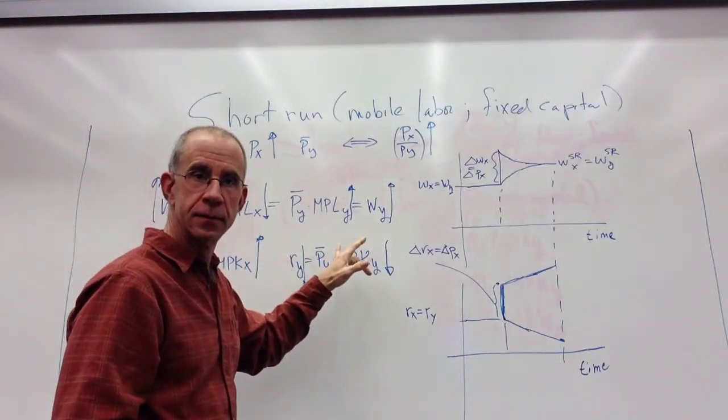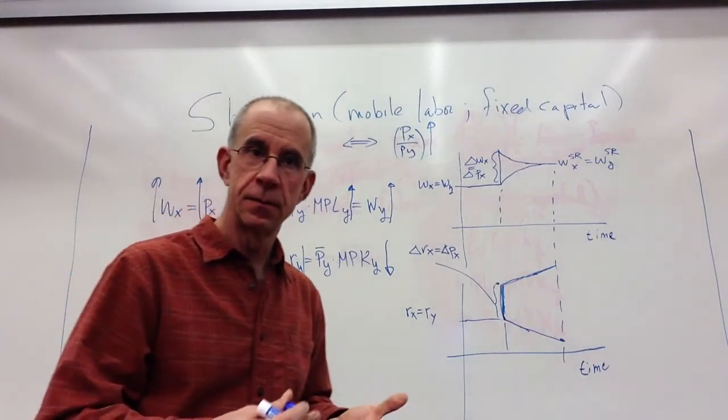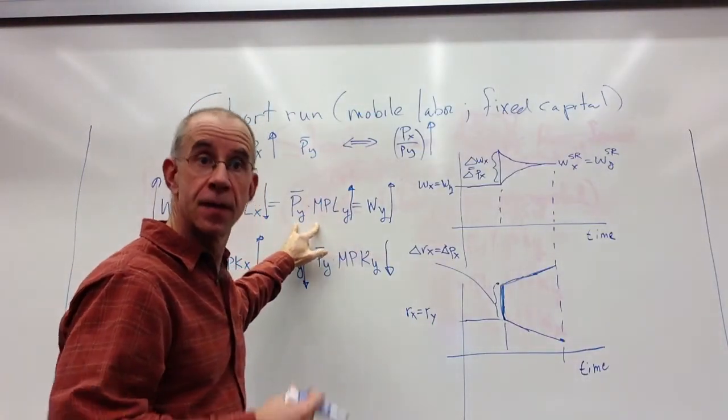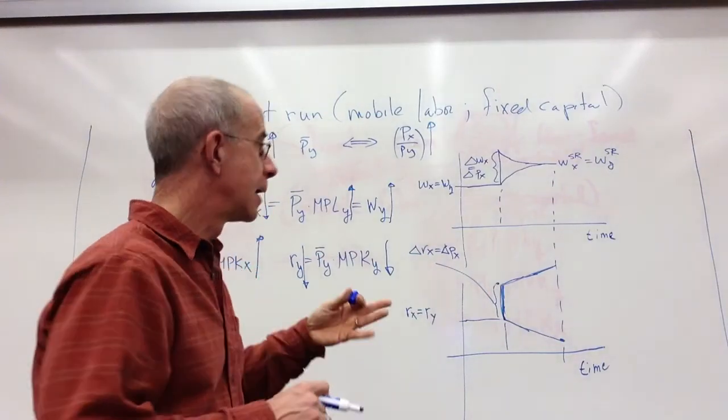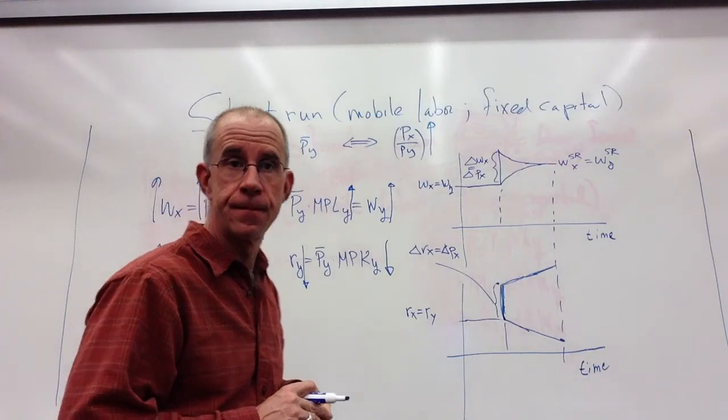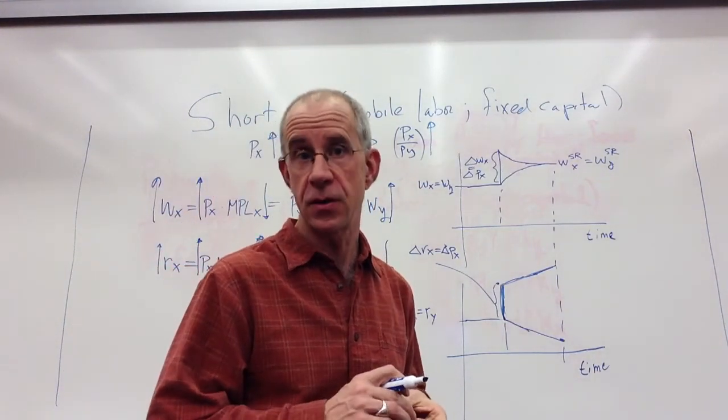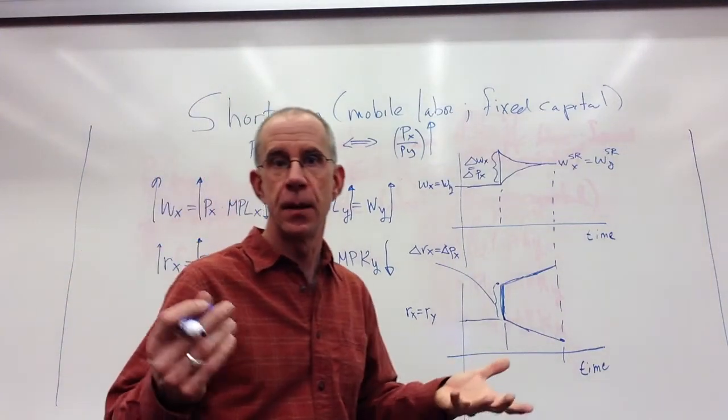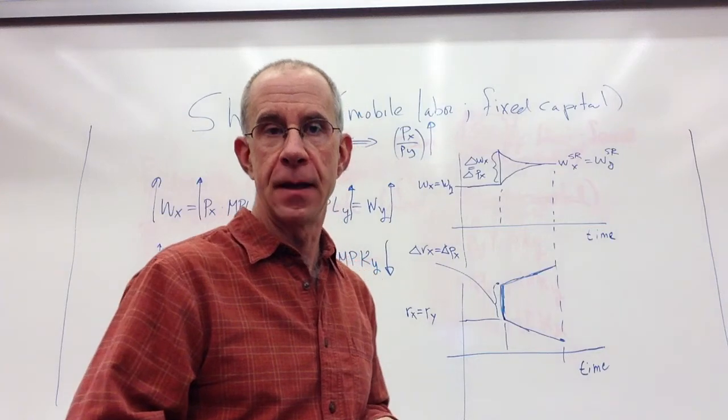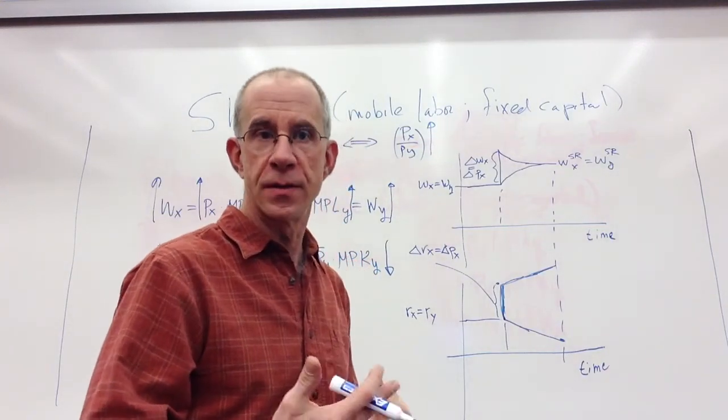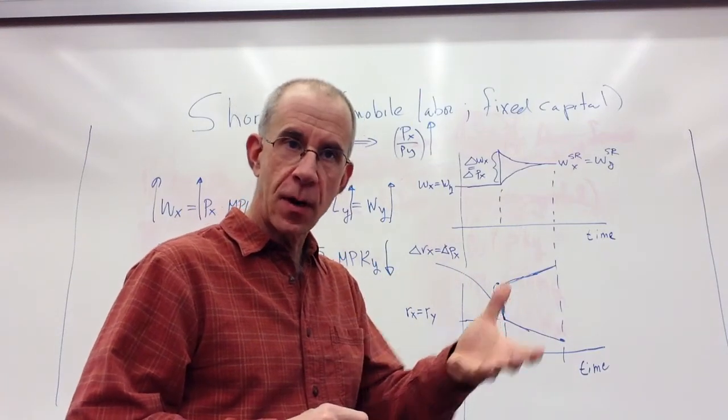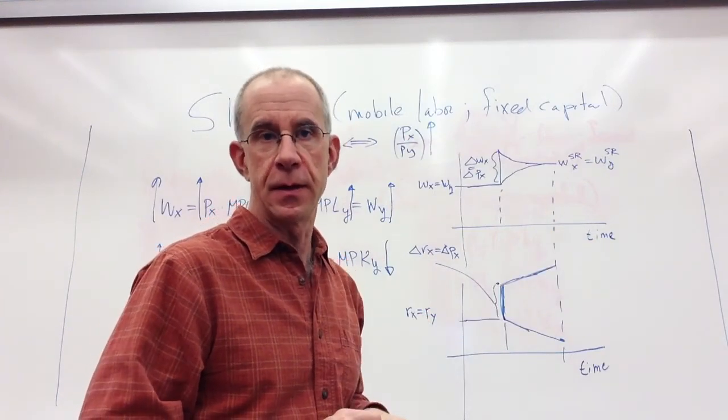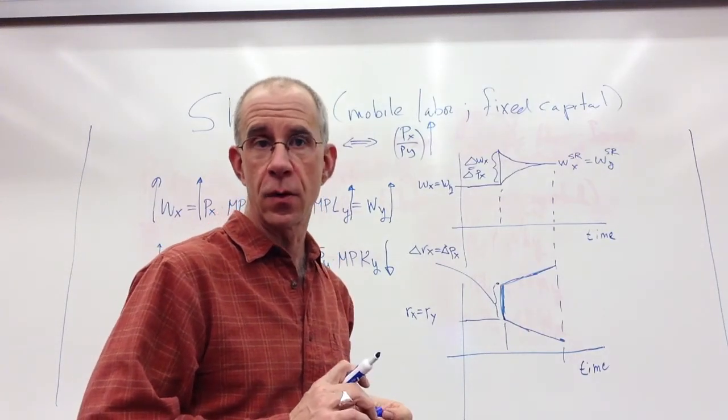The impact on the mobile factor depends very much on their purchasing patterns, their consumption patterns. The more they buy of the good whose prices stayed the same, the better off they are because they've had a nominal wage increase. The more they buy of the good whose price went up, the less likely they are, they're actually going to potentially be worse off. Imagine that X was a staple good that everybody in the society purchases, say corn in a society that really relies on corn as a staple part of the diet. The increase in the price because of exports of corn might end up hurting people because it's a staple and a big part of the budget of any worker in the society.